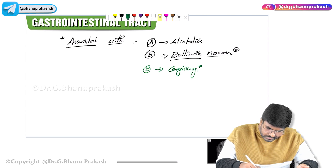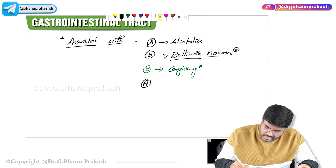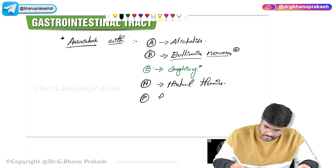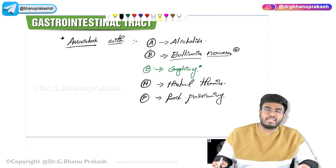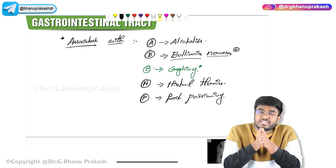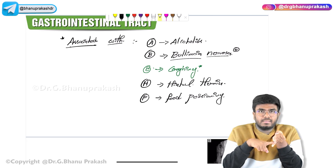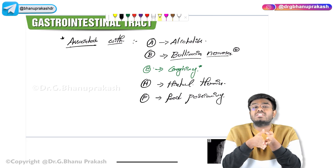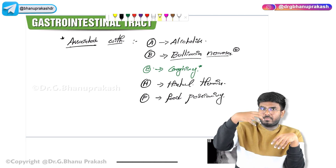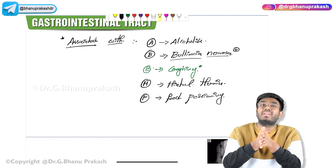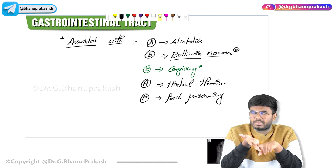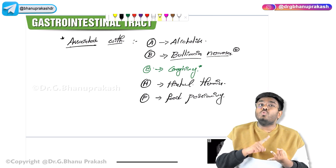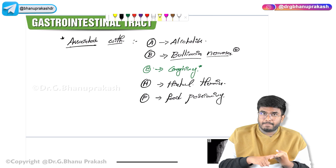After ABC, there is HF: H stands for hiatal hernia, and F stands for food poisoning. If a patient has Mallory-Weiss tears, they will have a longitudinal superficial tear. Hematemesis can occur because submucosal blood vessels can be involved. The blood can also pass down and break down leading to black-colored stools — melena. Hematemesis and melena can both be seen.